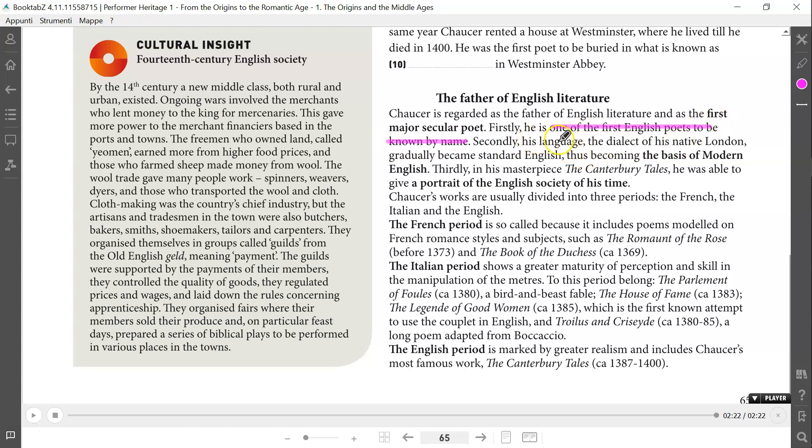One of the first English poets to be known by name. We know the name of the writer, and his language is the dialect of his native London. So he didn't use any Latin or French or Anglo-Saxons, but he used the native, the English spoken in London. And this English gradually became standard English. So we can say that he was the father of English literature because he started to use the language which was the language of common people, and his language is the basis of modern English.